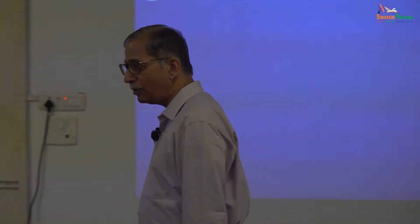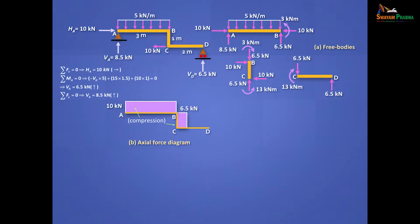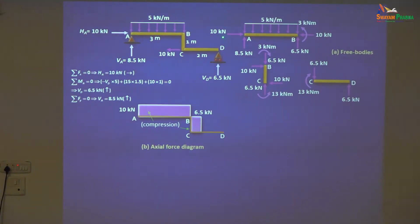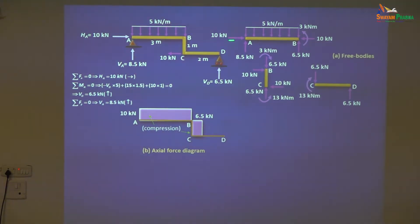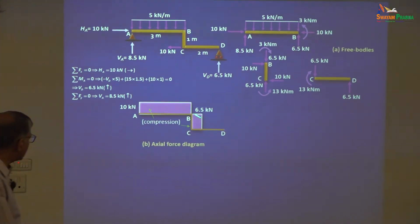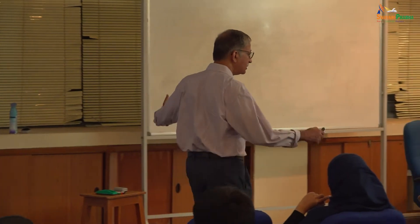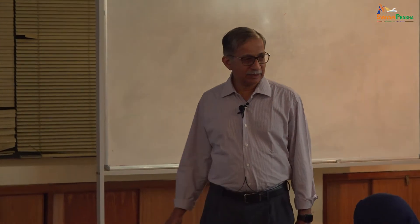Now we are ready to draw the three diagrams. Axial force diagram: you can see that only AB and BC have axial forces; CD does not have. The axial force is compression here and compression here. Value is 10 for AB; value is 6.5 for BC. You can write the value 'compression,' or you can put a minus sign and say plus means tension. First you have to draw the baseline and then superimpose this.